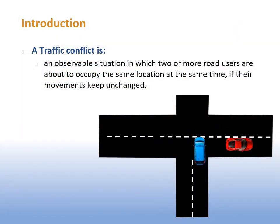A traffic conflict is a situation that is about to end in an accident, but is finally avoided by an evasive maneuver, such as swerving or braking. Their study is an alternative to the assessment of safety based on the analysis of crash databases. It requires a shorter data collection period, but the analysis is more difficult. Let's see how to analyze them.